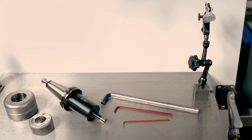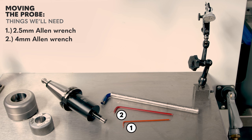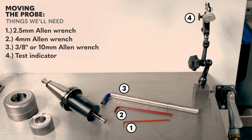To move our table probe over just a little bit, we just need a handful of tools. Two and a half millimeter Allen wrench, a four millimeter Allen wrench, and a three eighths Allen. We'll also make use of a 10th indicator and our probe calibration tool, which is just a tool with a known length and diameter.